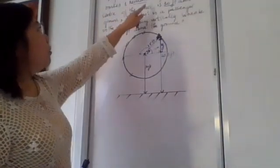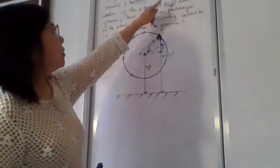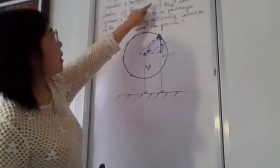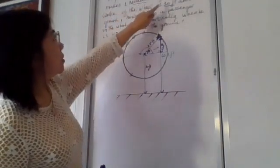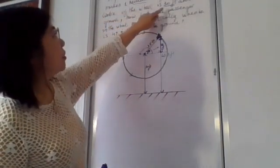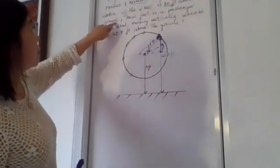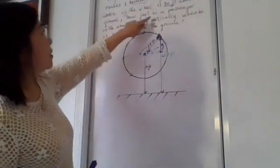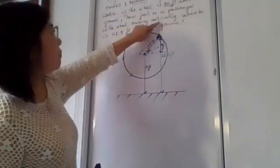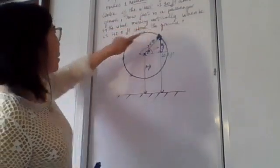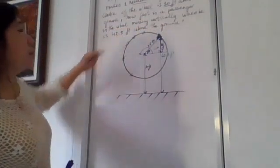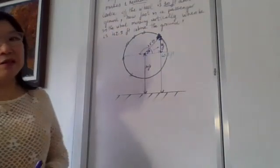A Ferris wheel 50 feet in diameter makes a revolution every two minutes. If the center of the wheel is 30 feet above the ground, how fast is the passenger in the wheel moving vertically when he is 42.5 feet above the ground?